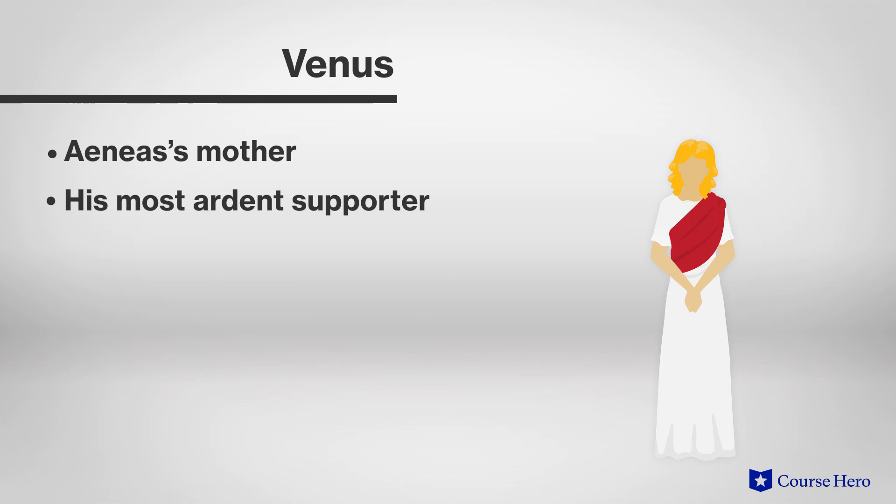Venus is Aeneas' mother and his most ardent supporter. She repeatedly advocates on behalf of her son and intervenes in events to protect Aeneas as much or more than Juno intervenes to obstruct him.